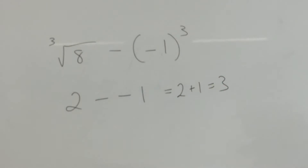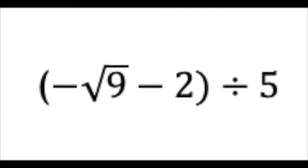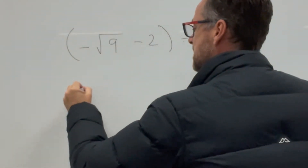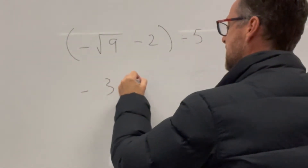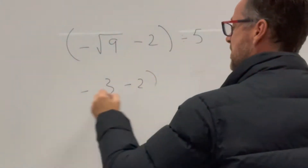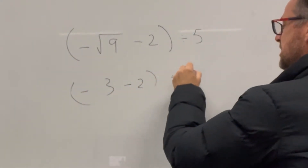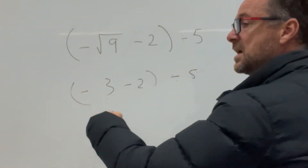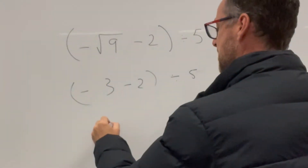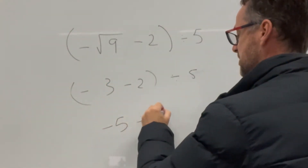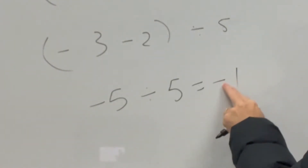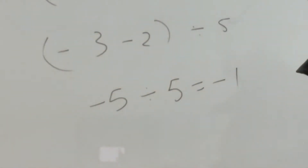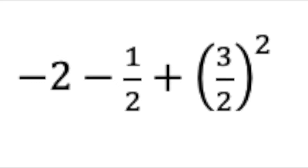The answer to that part is 3. Here you can divide again — it's the square root of 9 which is 3, then take away 2. That's all in brackets, divided by 5. Negative 3 take away 2 becomes negative 5, and negative 5 divided by 5 equals negative 1, because negative 1 times 5 equals negative 5.